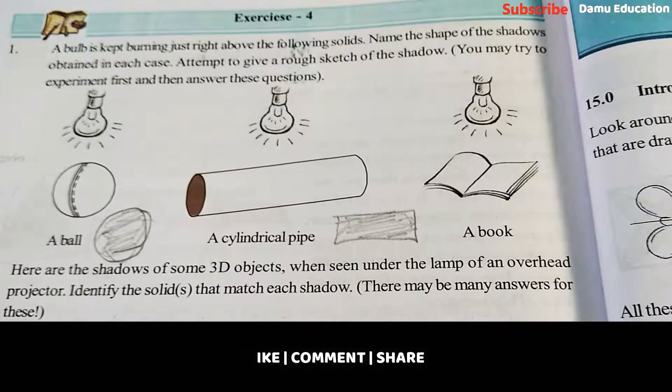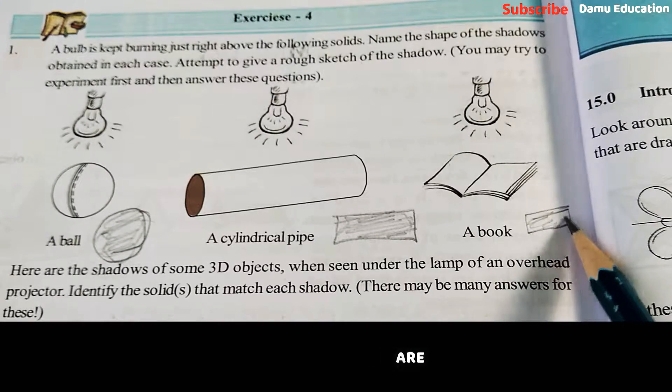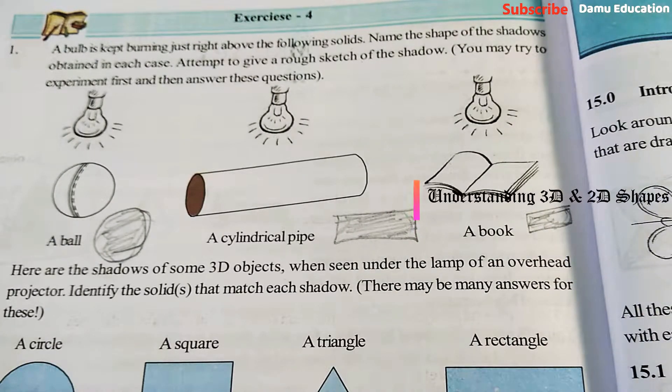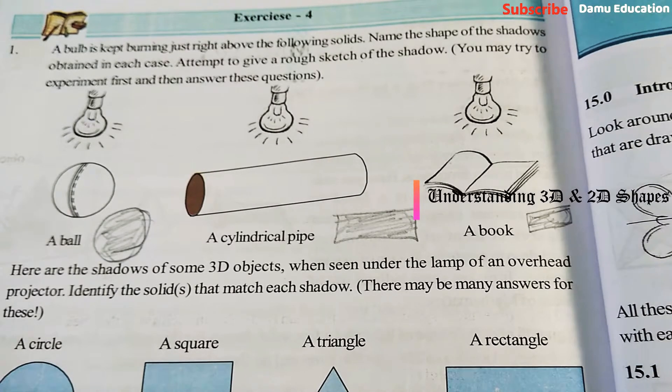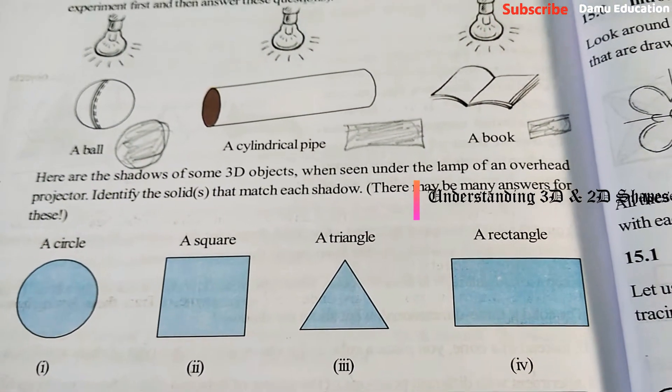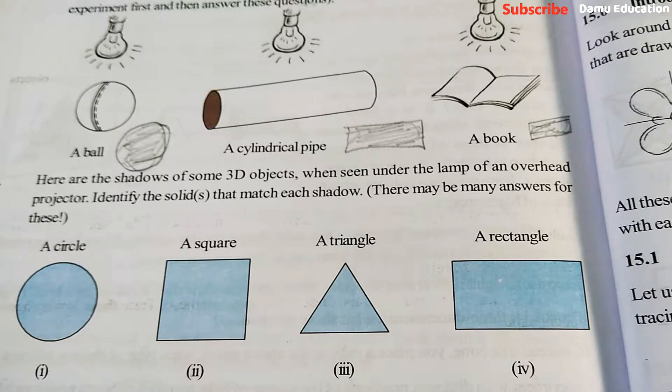A book will also be a rectangle shape, so 3D objects will cast 2D shapes. Here are the shadows of some 3D objects when seen under the lamp of an overhead projector. Identify the solid that matches each shadow. There may be many answers for this.